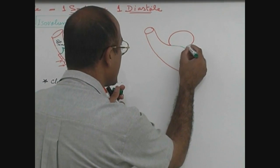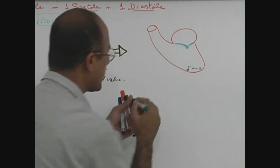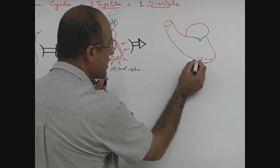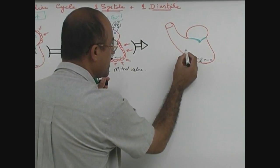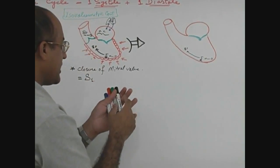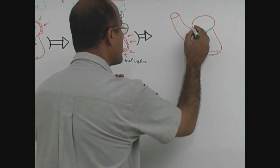We have already discussed that when it was isovolumetric contraction, pressure has gone up to 81. As soon as it becomes 81, pressure in the ventricle will become more than aortic pressure.